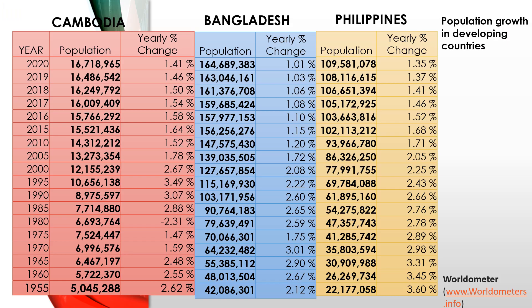Now we have the comparison between developed and developing countries. Developing countries include Bangladesh, Philippines, Cambodia, India, China, Indonesia, Malaysia, Myanmar, Papua New Guinea, and others. Of all these countries, we will focus on Cambodia, Bangladesh, and Philippines. Let's look at the population growth rate of these countries.